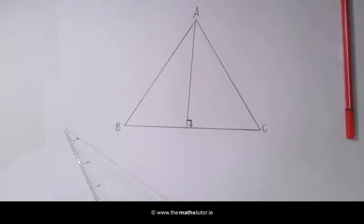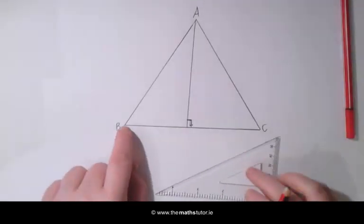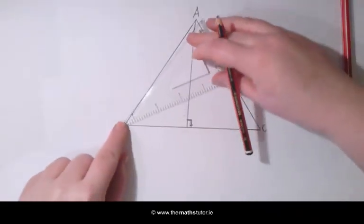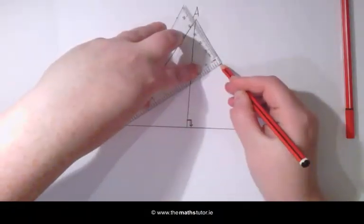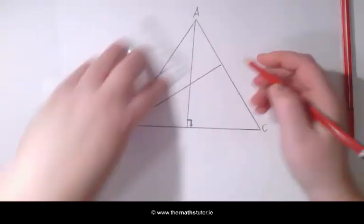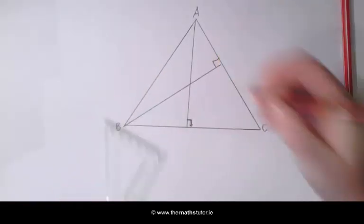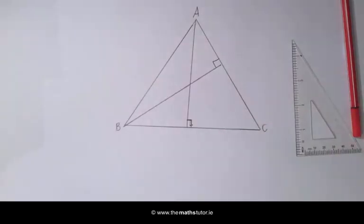We are now going to repeat this for another vertex. So placing it at B we want to draw a right angle with the opposite side. Here we can see we have formed another right angle.